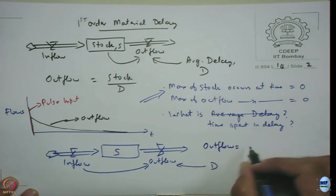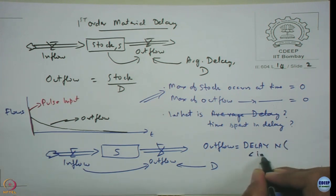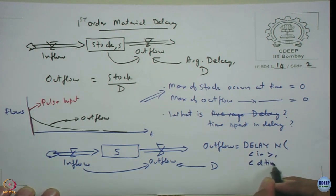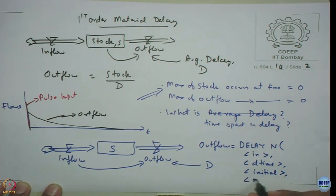And the equation for outflow, I just write the very general version. DELAYN, lack of space I am just writing what is in the parenthesis here. I have in, D time, initial value exactly same as the previous case of fixed delay, except I have one more variable called as order, one more input. Order defines what order I want. First order I put 1, second order I put 2 etcetera. But here this diagrammatic representation continues to remain the same, inflow directly connected to the outflow.